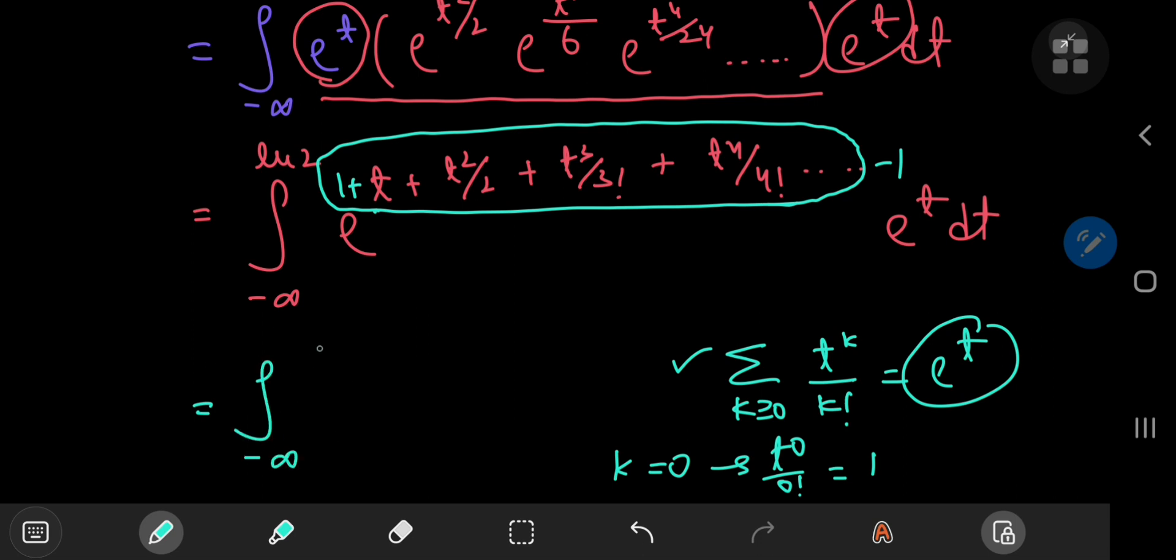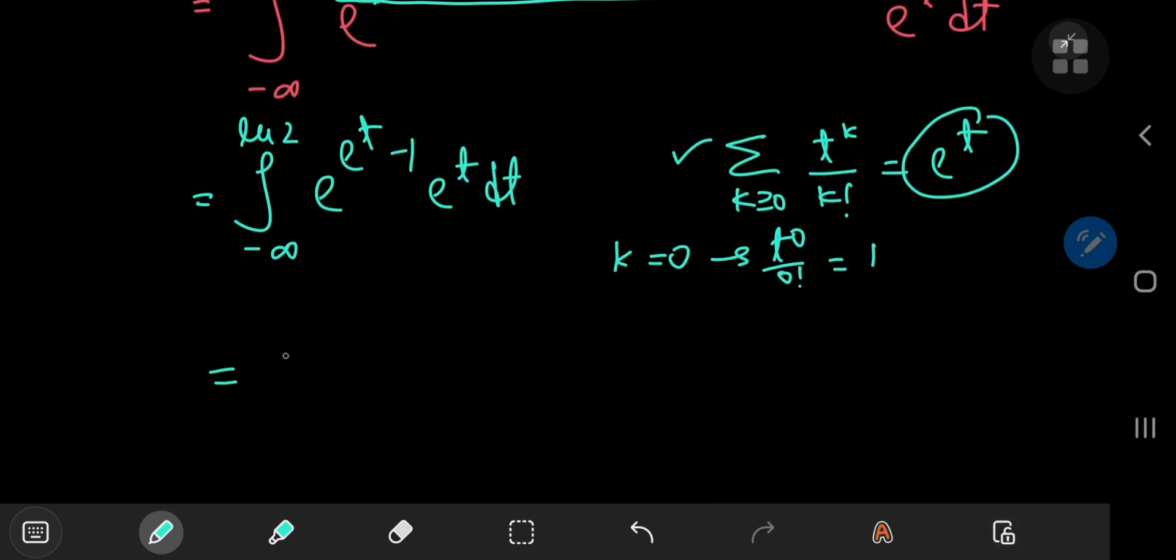So we have the integral from negative infinity to the natural log of 2 of e to the e to the t minus 1 times e to the t dt. And this can be evaluated quite easily because we have e to some function of t times the derivative of that function of t. So we have this integral evaluates to e to the e to the t minus 1. And the limits of integration are the natural log of 2 and negative infinity.